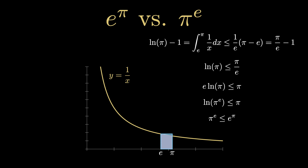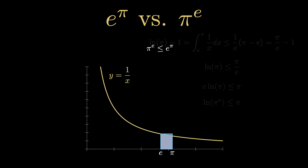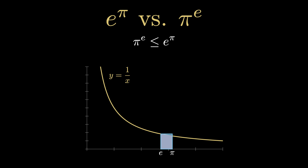So there you have it. We used calculus on the curve y equals 1 over x to convince ourselves that pi to the e is less than or equal to e to the pi.